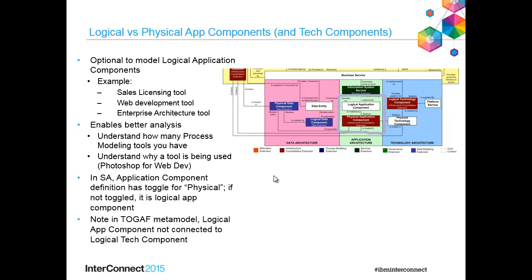Looking at the purple crayon, we're looking at logical application components and physical application components at this point. Examples of a logical application component: a sales licensing tool, a web development tool, an enterprise architecture tool. It enables you to have a logical application layer, enables you to have more understanding of the architecture, better analysis, and understand why a tool is being used.